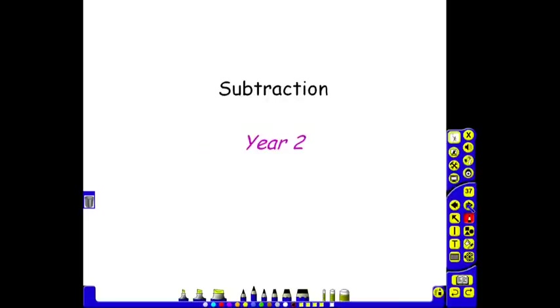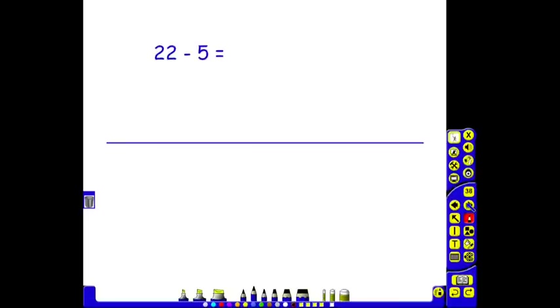Year 2 subtraction. Year 2 moves forward and builds on what the children have done in year 1. And again we're looking at number lines where we can count back, we can also count forward. Number lines could be prompted with the numbers on them, or as in this case it might be a blank number line altogether.